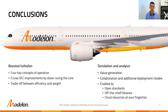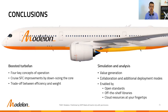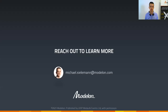To wrap up, I'd like to highlight the four concepts of operation of the boosted turbofan that we covered. We saw the improvement in cruise specific fuel consumption, and we also saw how specific thrust influences the trade-off between hybrid efficiency and weight. Concerning simulation and analysis, we discussed the increased focus on value generation enabled by better means for collaboration and additional deployment modes throughout the extended engineering team. We also discussed enablers in terms of open standards, off-the-shelf capabilities, and the integration of cloud resources. With this, I'd like to thank you for your attention, and I hope the material presented was interesting to you. Please join us for the live discussion or reach out by email.